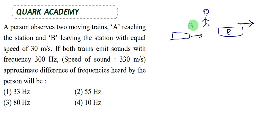First, the actual frequency is 300 Hertz. The speed of sound is 330 meters per second. The train velocity is 30 meters per second. The velocity of the source Vs is 30 meters per second.